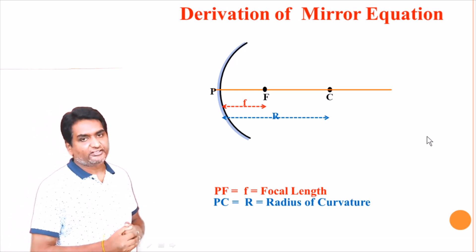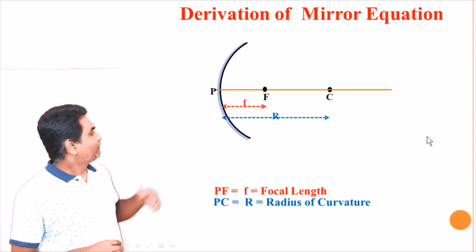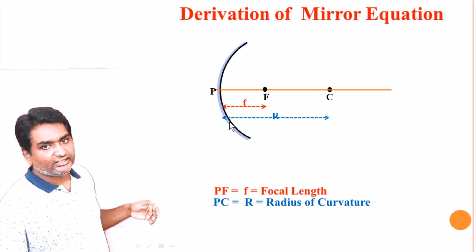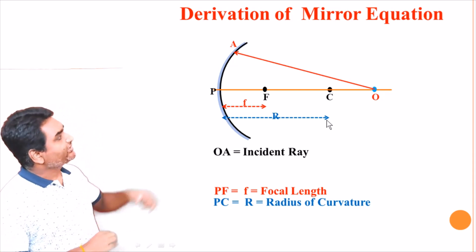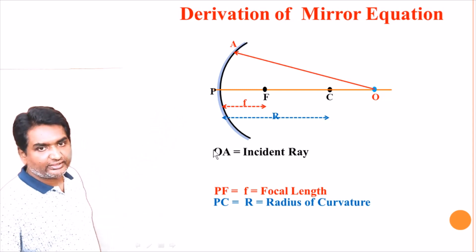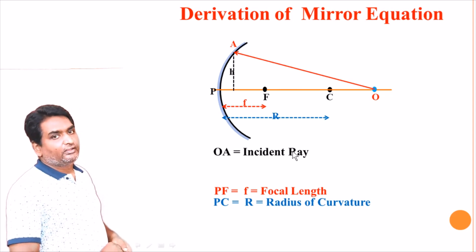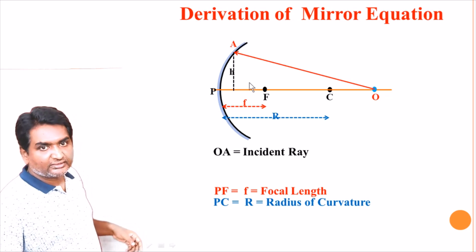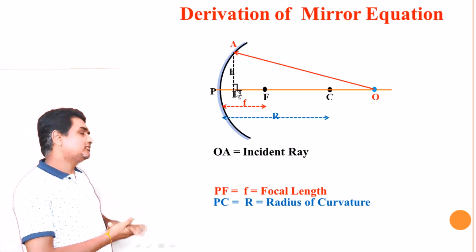Now we will derive the mirror equation. To derive the mirror equation, let us consider a concave mirror of focal length f and radius of curvature R as shown in the figure. Consider a light ray that strikes the concave mirror at point A — O-A is the incident ray. At the point of incidence A, I have dropped the normal onto the principal axis. This foot of the perpendicular is P-dash, and let us say the point A is at a height H from the principal axis.